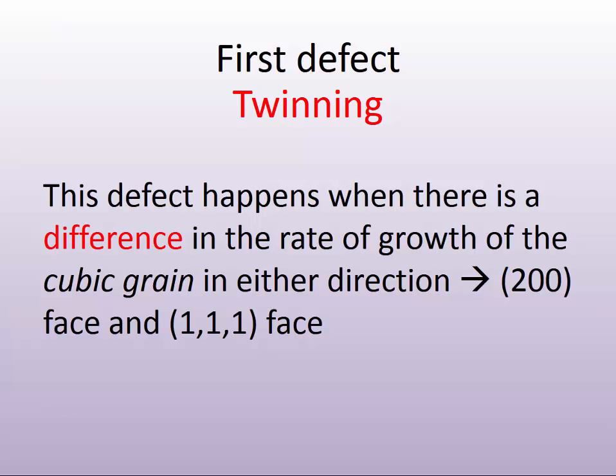Let's review our first defect. The first defect takes advantage of the differences in the rate of growth of a cubic grain in these two face directions that we've talked about — the 2-0-0 and the 1-1-1.